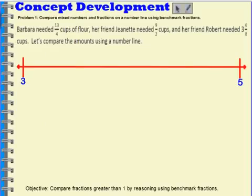We're going to solve a word problem that involves fractions, and we're going to use a number line to help us. It says Barbara needed 13 fourths cups of flour, her friend Jeanette needed 9 halves cups, and her friend Robert needed 3 and 6 eighths cups. Let's compare the amounts using a number line.